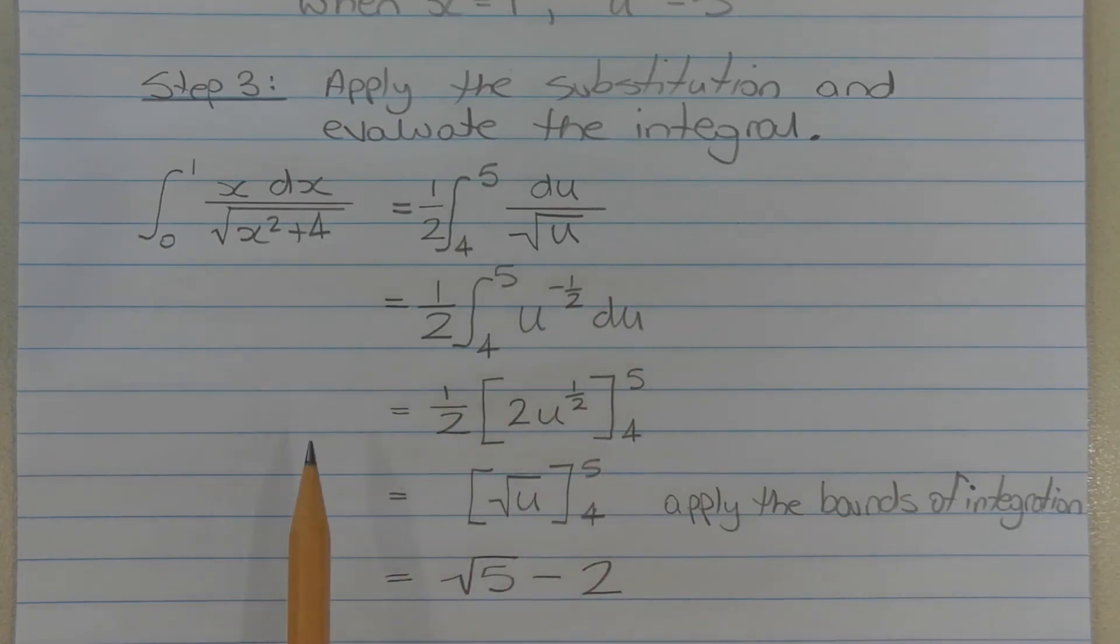Performing the integration, that equals half times 2u to the power of half from u equals 4 to u equals 5. Multiplying the half and the 2 together, that equals the square root of u from u equals 4 to u equals 5. Applying the bounds of integration, that equals the square root of 5 minus 2.